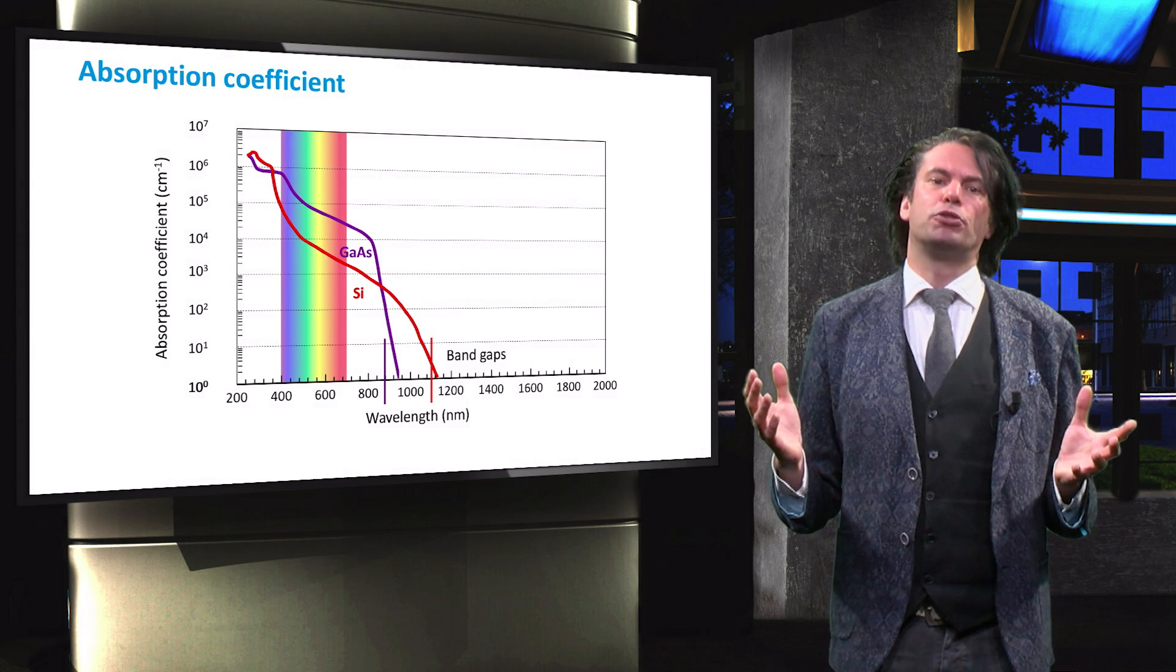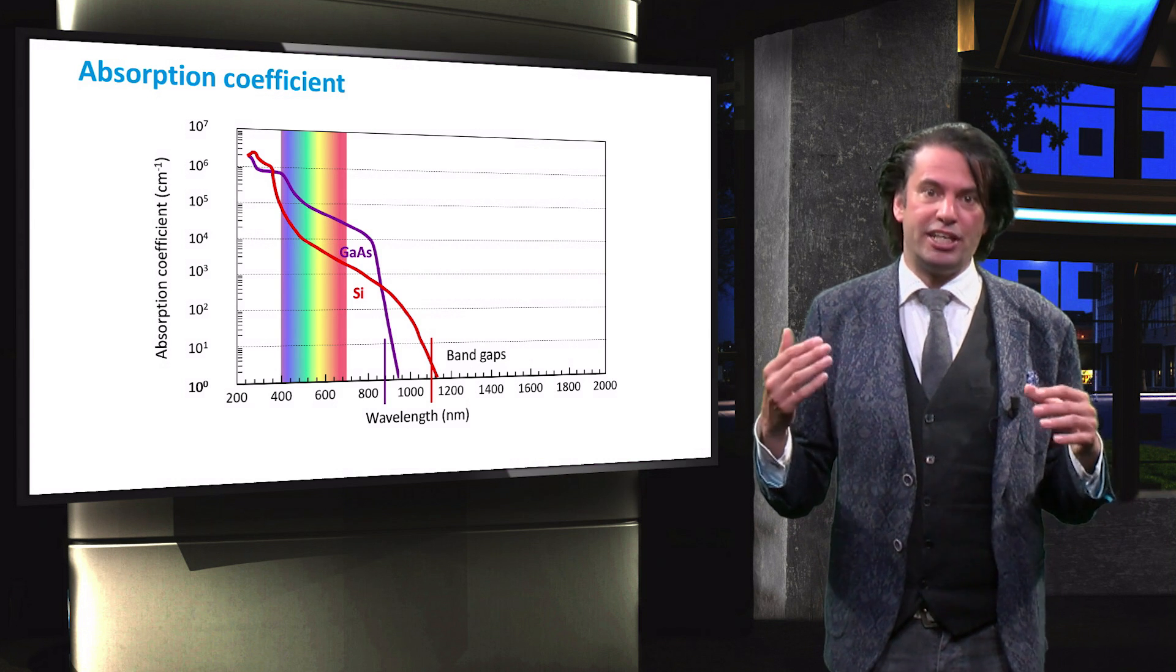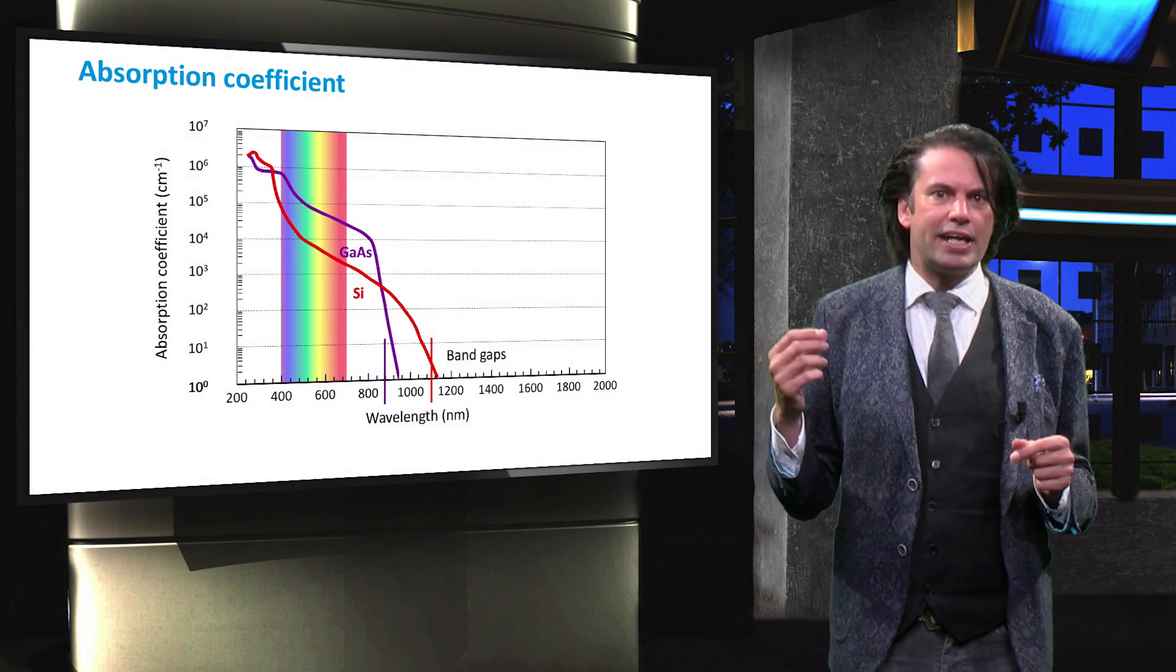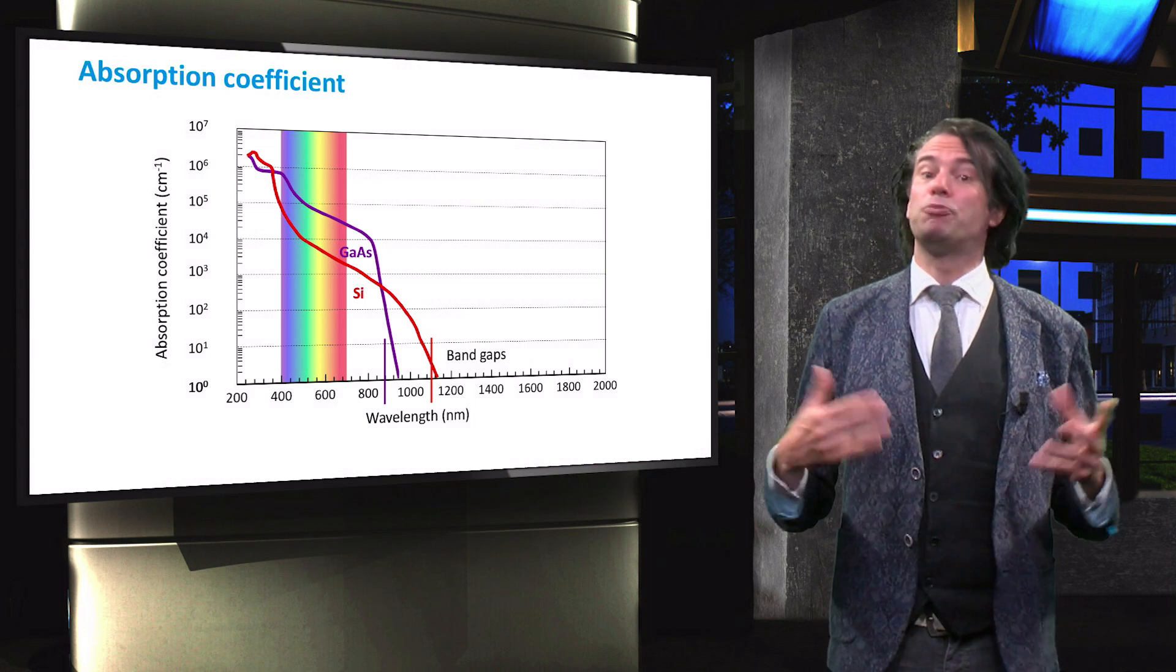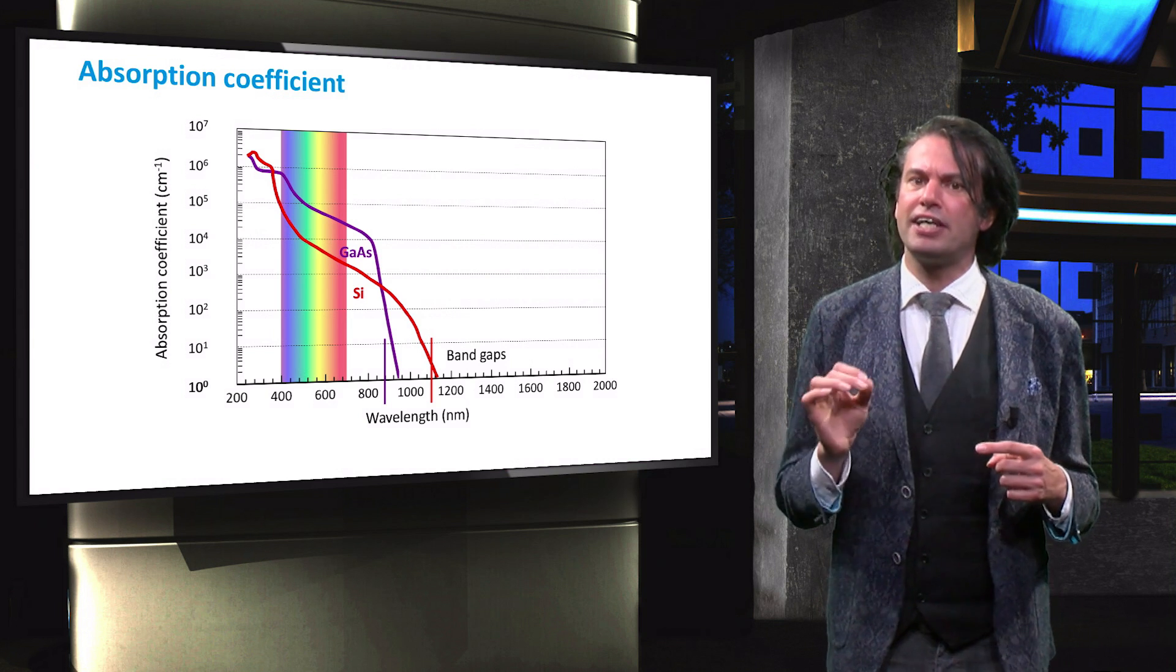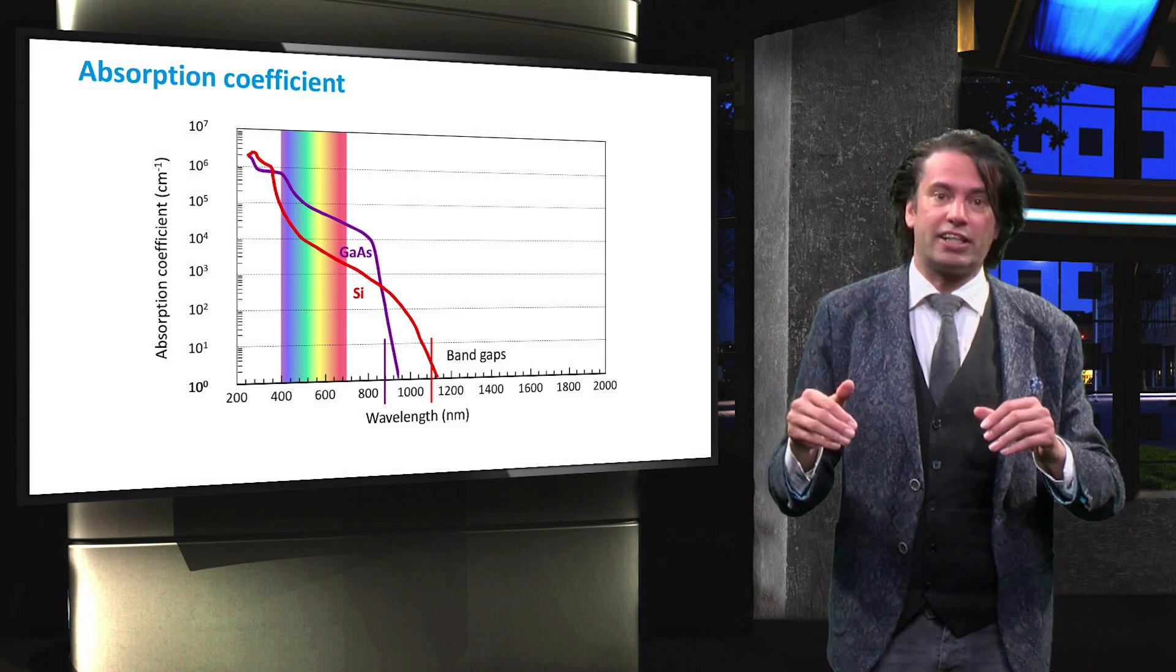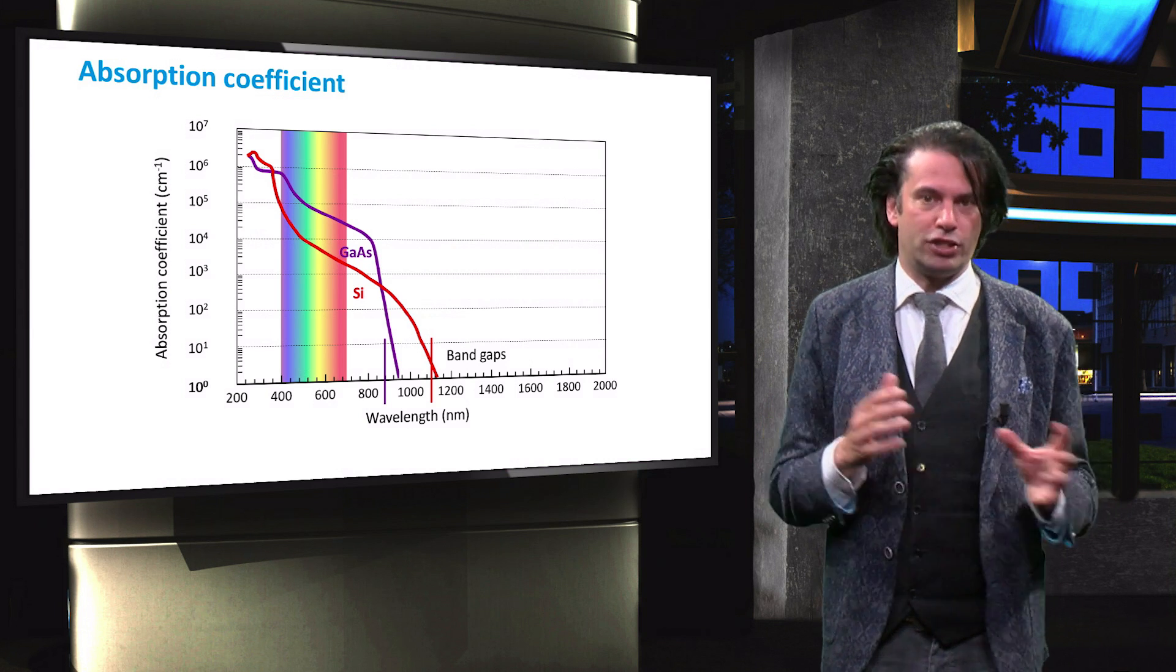The visible part of the spectrum, where the solar irradiance is the most powerful, is indicated by the colorful band. As we can see, the absorption coefficient of gallium arsenide in the visible spectrum is significantly higher than that of silicon.